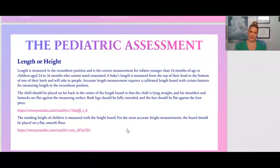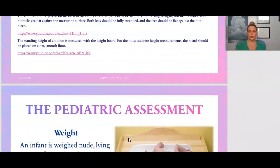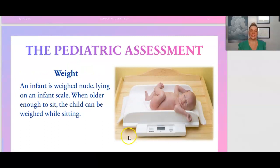There is a YouTube video linked here that demonstrates how length measurement should be done. For standing height, a height board is used on a flat, smooth floor — very similar to how height is measured for adults at an annual physical. There is also a video link for that. For weighing, an infant is weighed nude on an infant scale; when old enough to sit, the child is weighed sitting, with diapers and clothes removed.